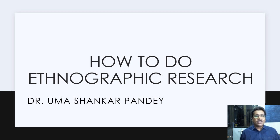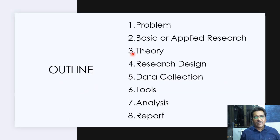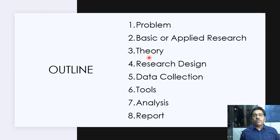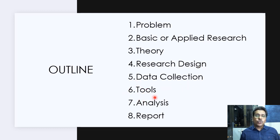Ethnography begins with a description of the problem, and then a decision has to be made whether that problem is suitable for ethnographic research. Another decision is whether we use basic ethnic research or applied research. We base our observations on certain theories applicable for the present problem, design the ethnographic study consisting of different kinds of fieldwork, conduct data collection using certain tools, and finally analyze the data and create the ethnographic report. These are the eight stages we'll discuss today.